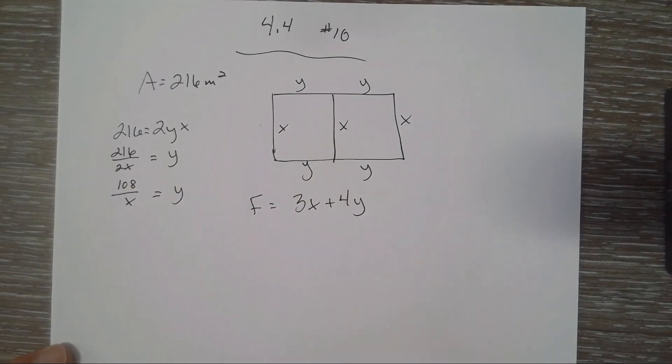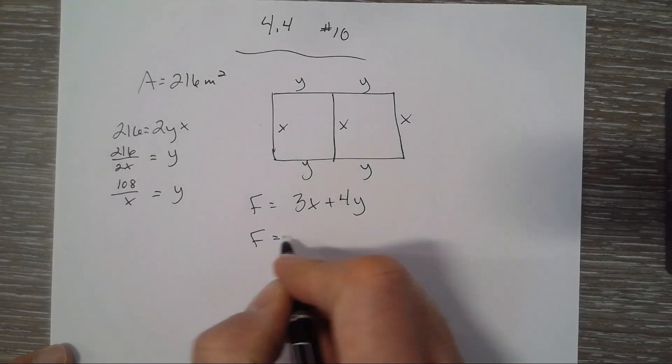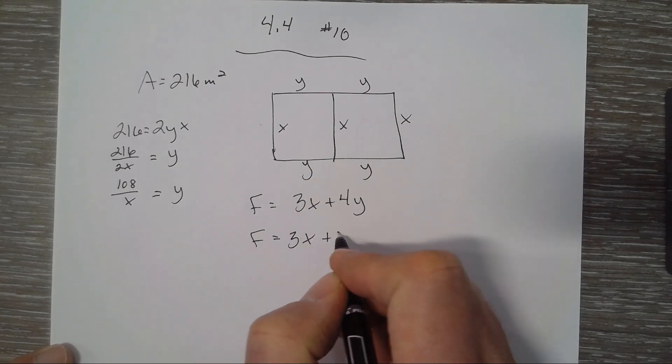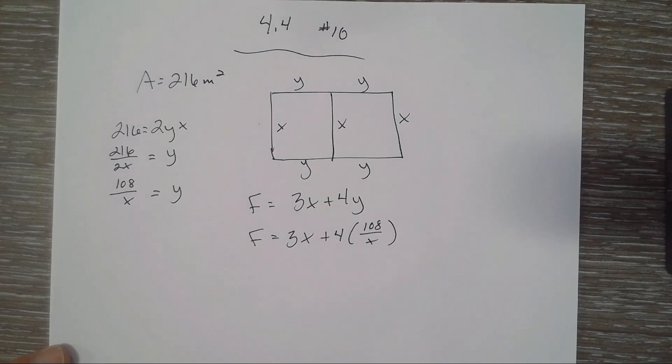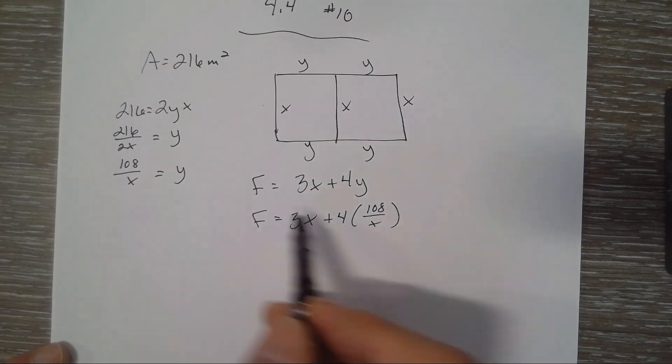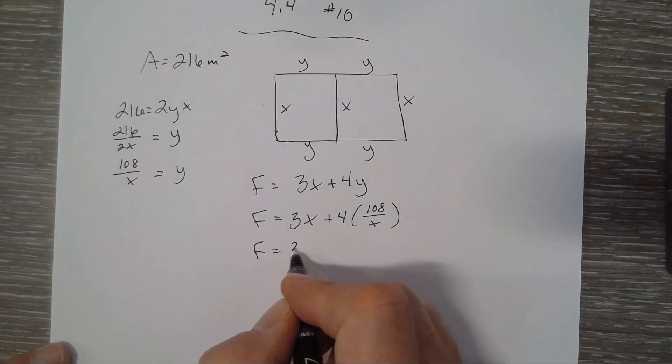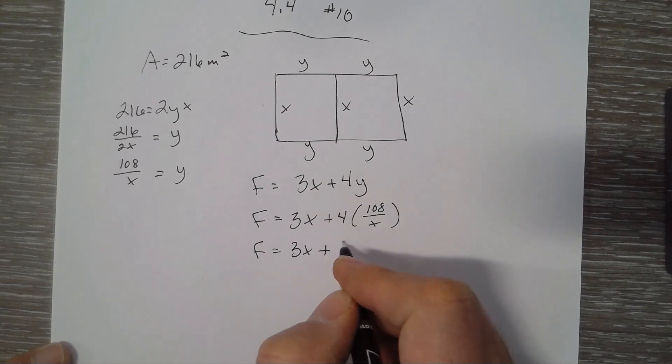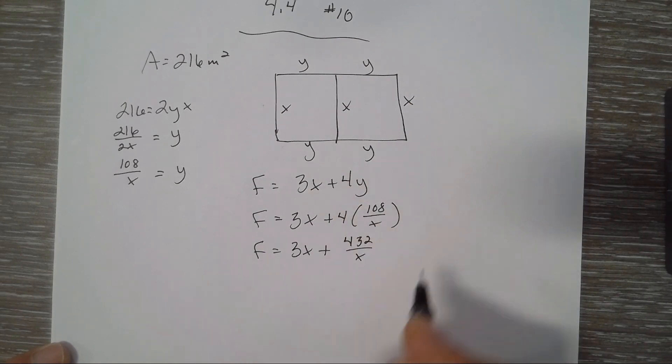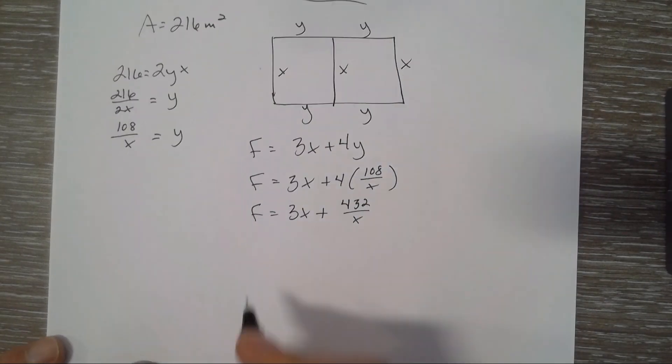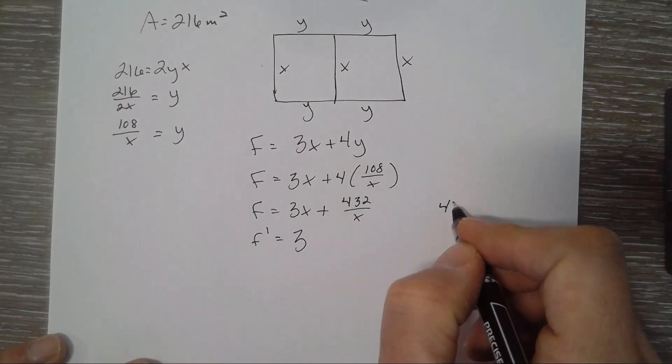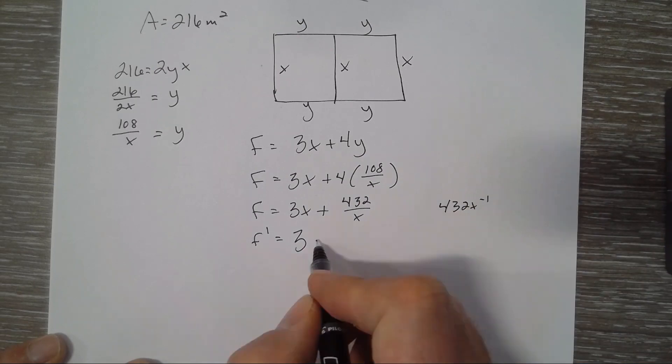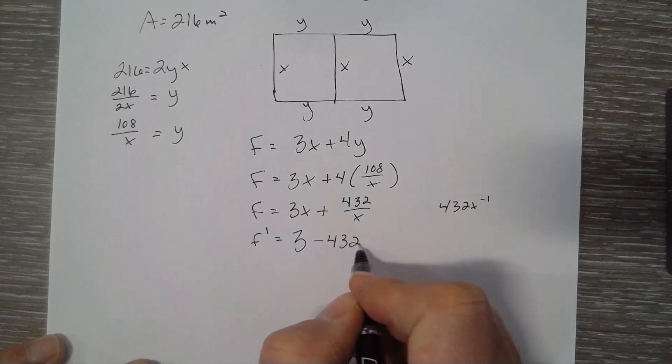So now my new and improved fence equation is that. And we're down to one variable. So our fence is 3x plus 432 over X. And we can find our derivative. So 3, that's 432x to the negative 1. So it's minus 432x to the negative 2.